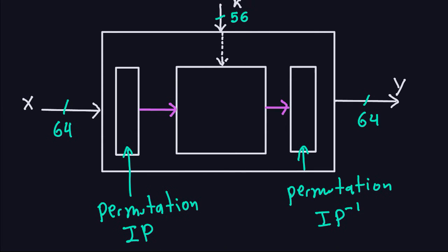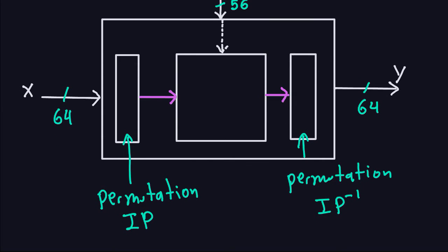We call that the internal permutation. Now the last permutation — which is another permutation totally related to this one — remember this is the inverse permutation of the initial one. It is also a permutation that does something to the block coming from the black box. It's important to remember that these permutations are not affected by the key of DES. The black box will be affected by the key, but not the permutations.